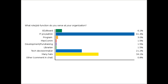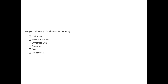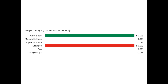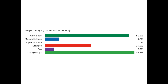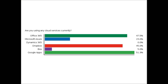Showing the results: 61% are in IT Pro or Admin roles, which is great. And 34% are Many Hats. We know that is frequently the case in nonprofits, libraries, and faith-based organizations. Are you using any cloud services currently? Are you already using something like Office 365, Microsoft Azure, or Dynamics 365? Maybe you are using Google Apps, Dropbox, or Box for file storage and sharing, replacing on-site servers with cloud services.